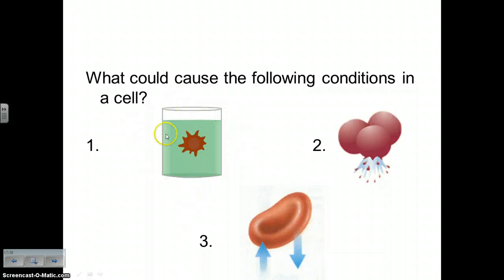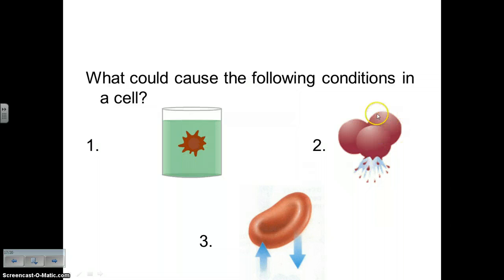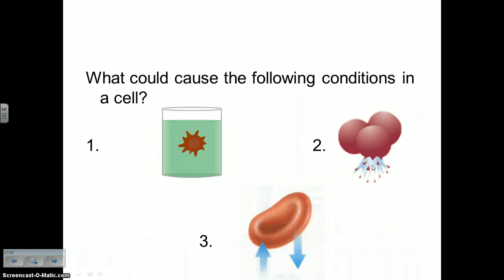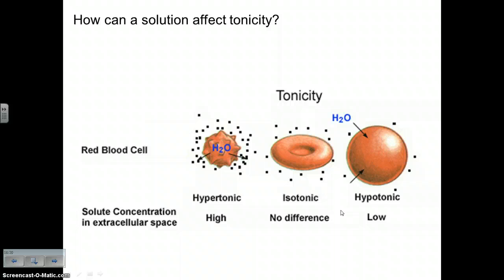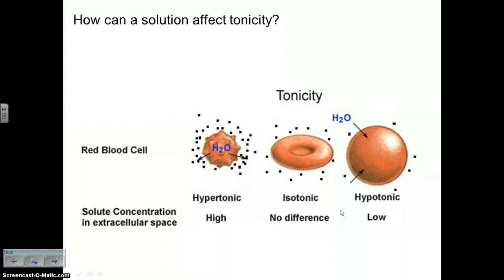To review: a cell that has shriveled up is in a hypertonic solution; a cell that has burst from taking in too much water is in a hypotonic solution; and a cell taking in equal amounts of water both in and out is in an isotonic solution. The diagram shows how solute concentrations differ across hypertonic, isotonic, and hypotonic conditions.